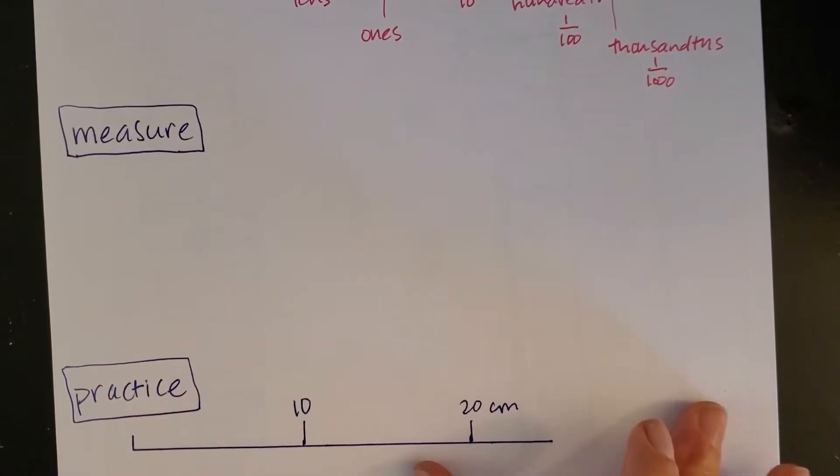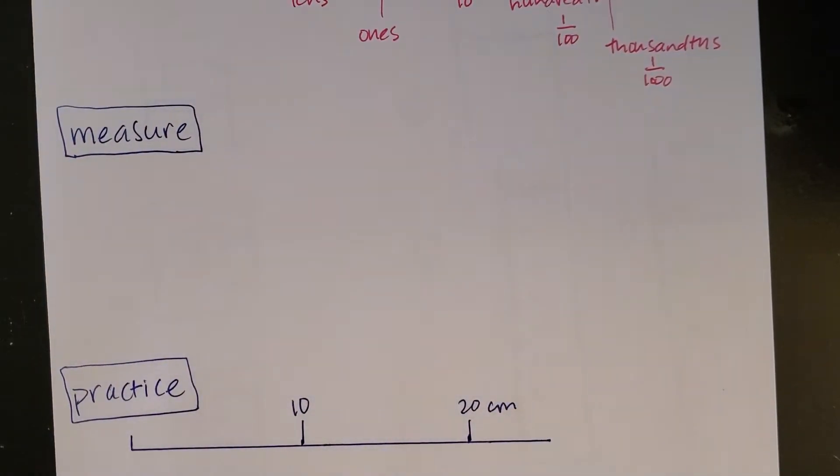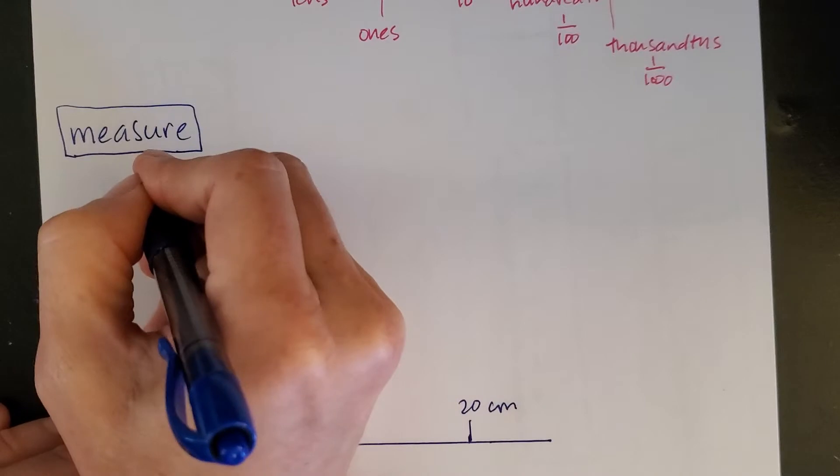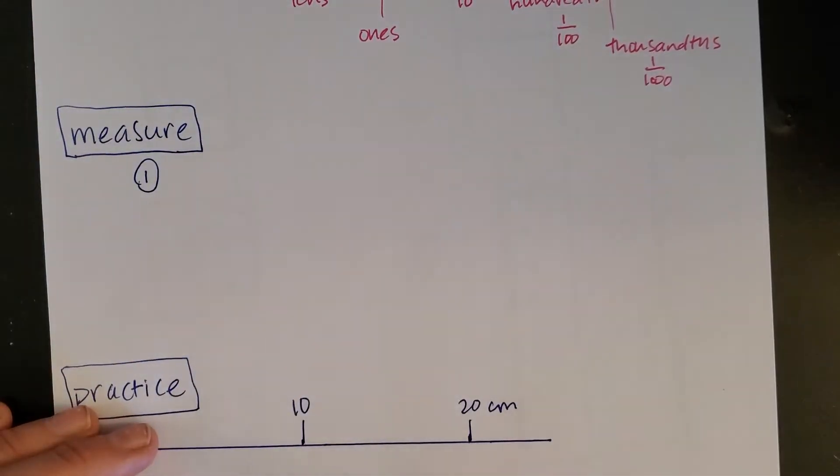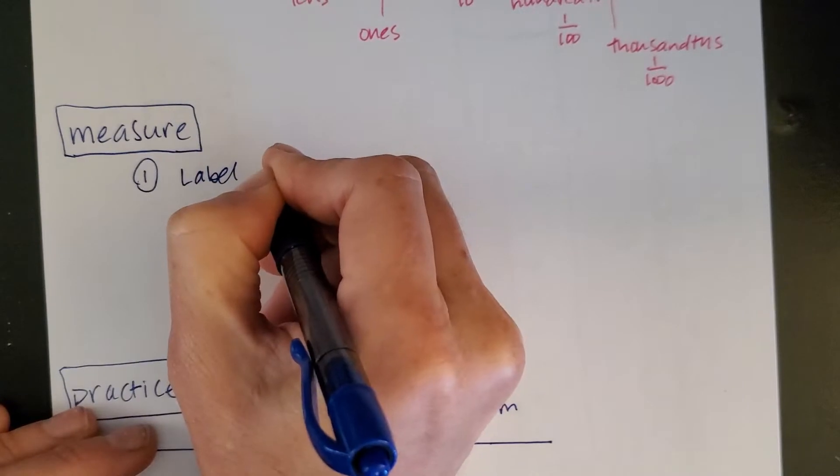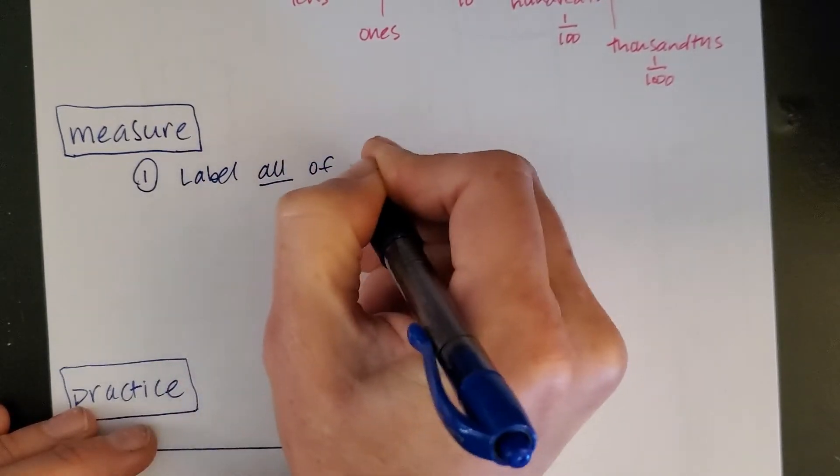When we measure using any kind of tool in lab, or if you get a measurement, it came from a tool somewhere. So we have three different steps we want to take through when we measure. The first one is when you have your tool or instrument, make sure that you label all of the markings.